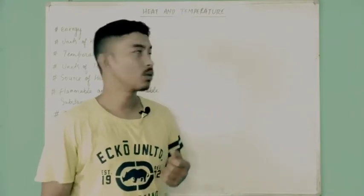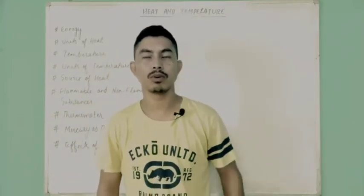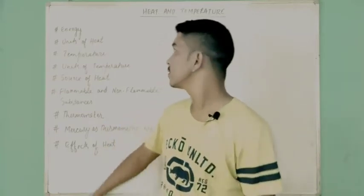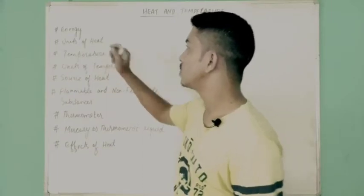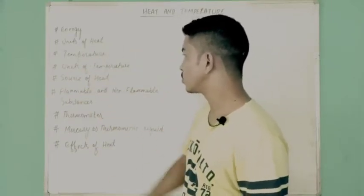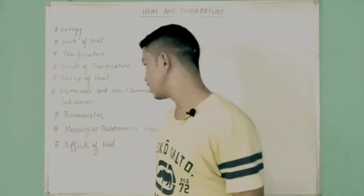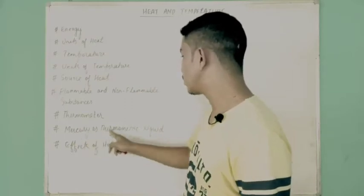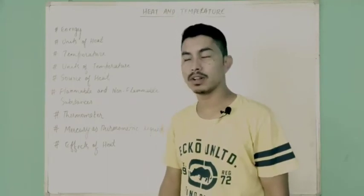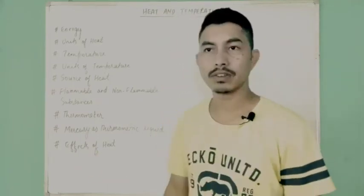Coming to the topic, we'll be starting a new chapter today — heat and temperature from your physics textbook. The important points we'll discuss include: heat as energy, units of heat, temperature, units of temperature, sources of heat, flammable and non-flammable substances, thermometer, why mercury is used as a thermometric liquid, why water is not preferred, and finally the effects of heat.